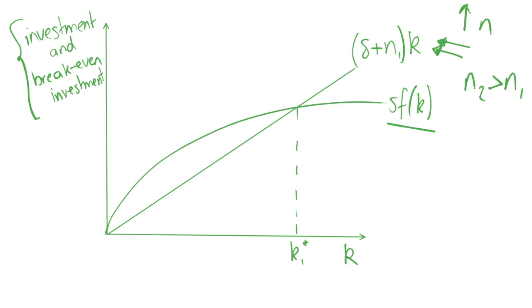This changes the slope of our break-even investment curve and increases the slope because we're increasing n. The slope of this curve is given by our depreciation plus population term. We pivot our curve to this new curve, which is given by the same depreciation as before but with n2, our new population parameter.